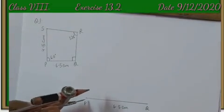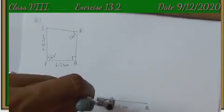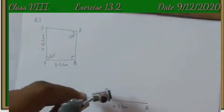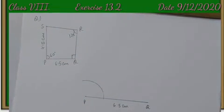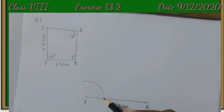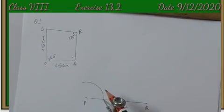Then, we can see we have to construct 60 degree, which can be constructed using compasses because it is a multiple of 15 degree. This is 0 degree point. We will keep the compasses here for 60 degree.